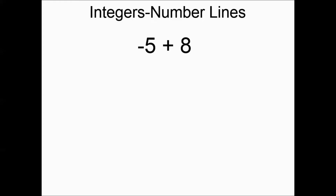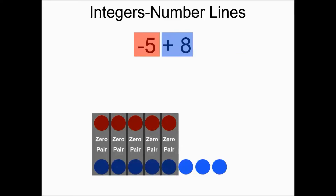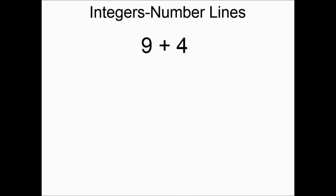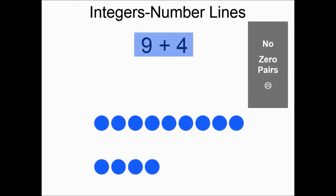Negative five plus eight: from here on, pause the video and figure it out on your own, then check it. You're going to have five negative chips and eight positive chips, then five zero pairs, and three positives left over. So your answer is three. Nine plus four: nine positive chips and four positive chips — there are no zero pairs, so you add up your chips. That's thirteen positive chips, so that's your final answer.